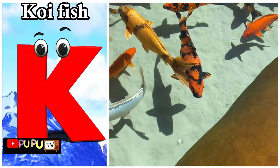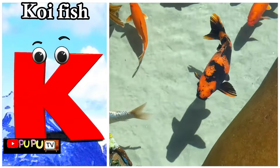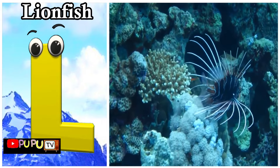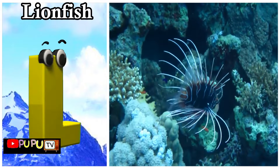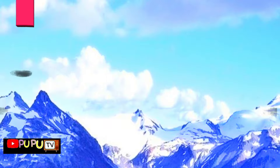K is for koi fish. Kuh, kuh, koi fish. L is for lionfish. Luh, luh, lionfish.